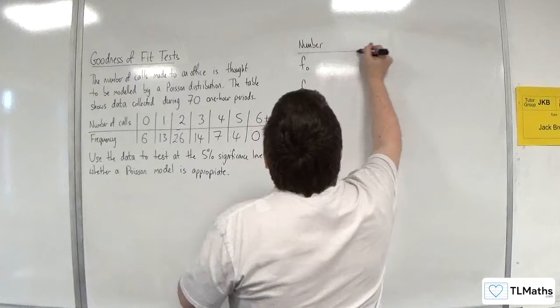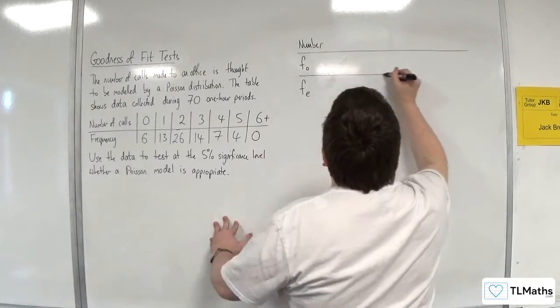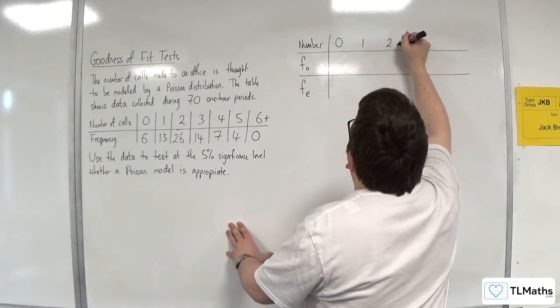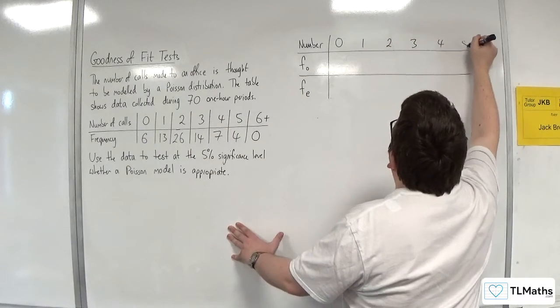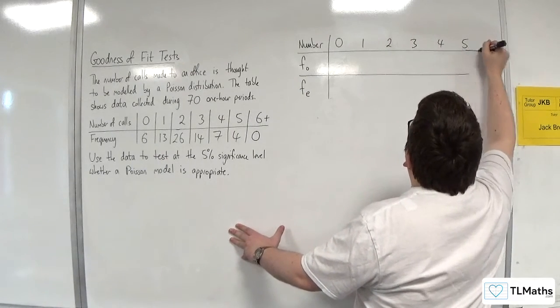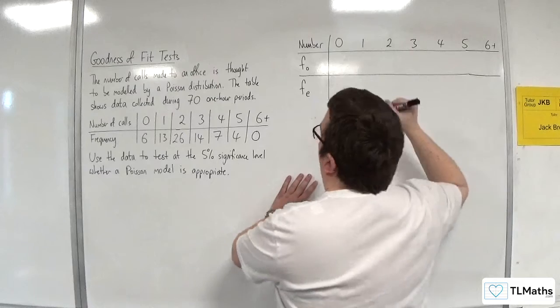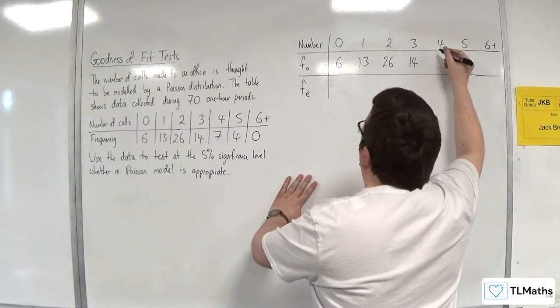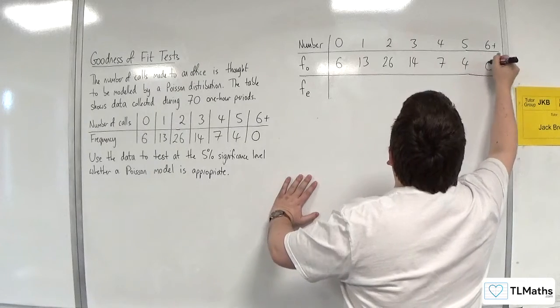So, 0, 1, 2, 3, 4, 5, 6 plus. The observed frequencies are 6, 13, 26, 14, 7, 4, 0.